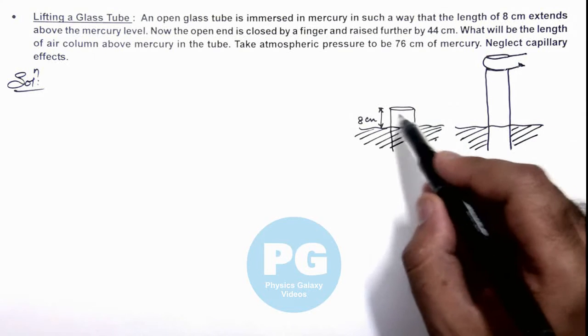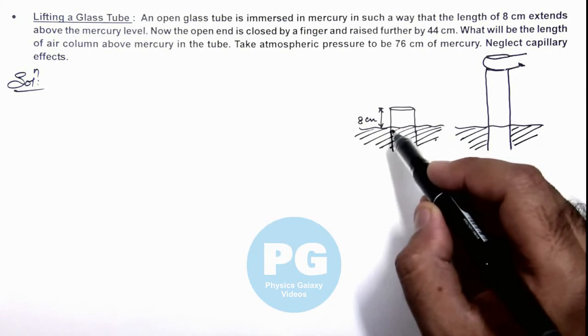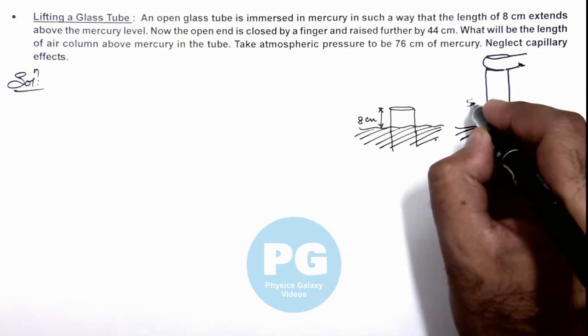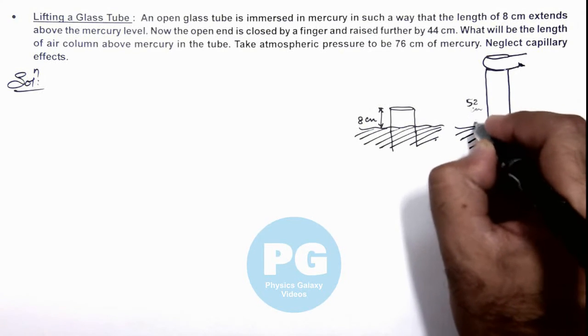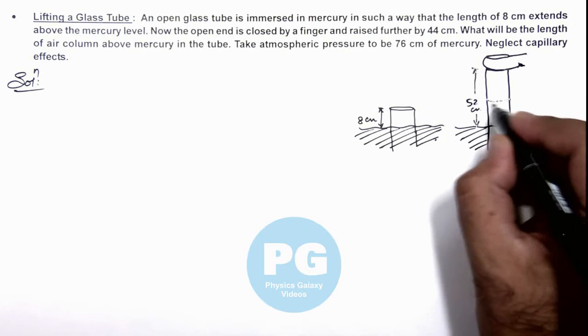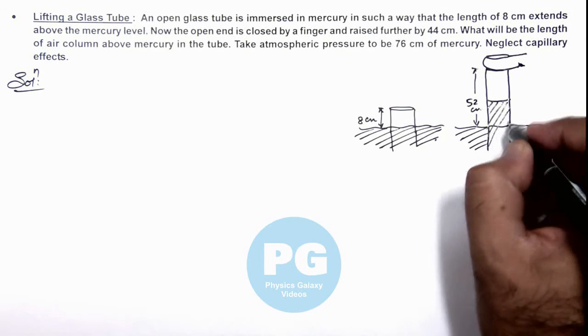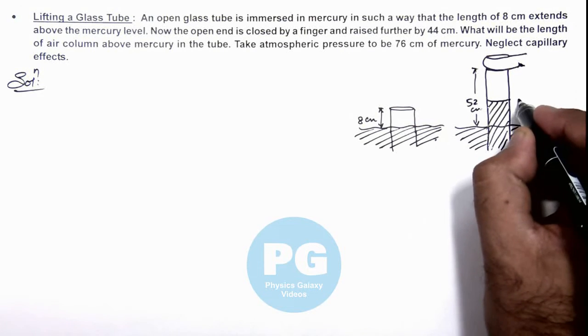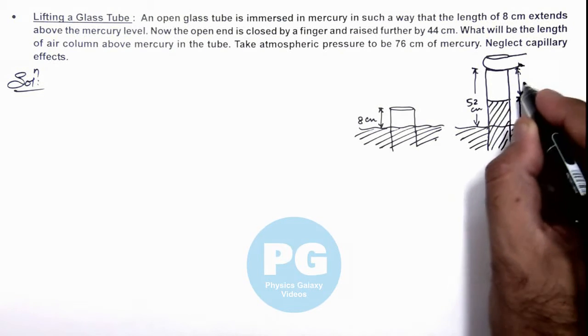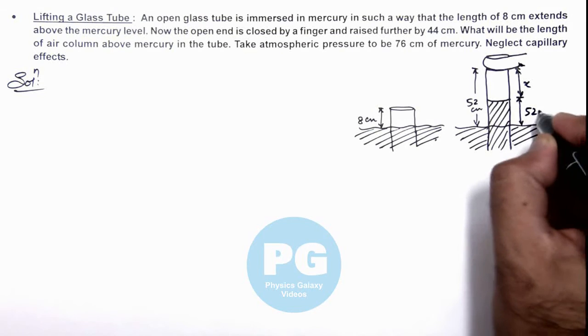On closing the tube here, the initial volume of air inside the tube can be taken as 8 centimeters. Now it is lifted up to 52 centimeters, and mercury is lifted along with the tube like this. If the air length is taken as x, this will be 52 minus x centimeters.